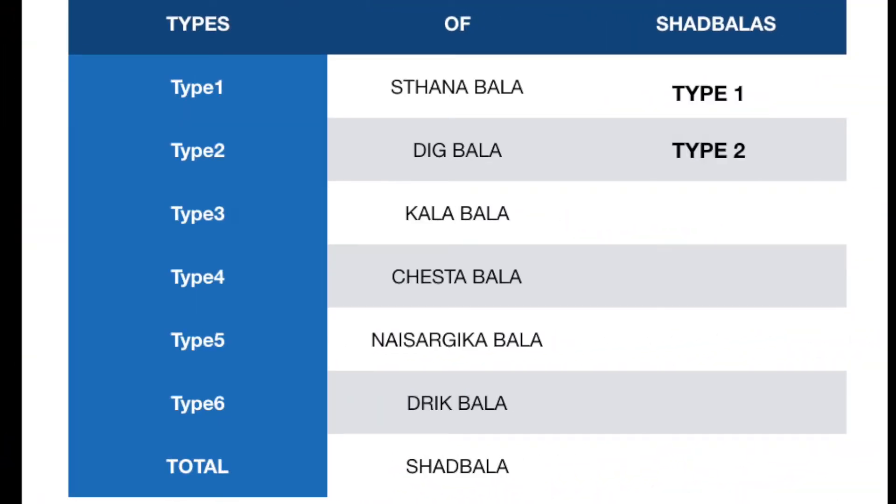In this part I am going to explain two types of Shat Balas. There are actually six types of Shat Balas in total, and I will explain the other four in the coming parts. Please look at the chart shown where you will see all six types of Shat Balas. According to all these types, you need to check the condition of each and then come to conclusions.